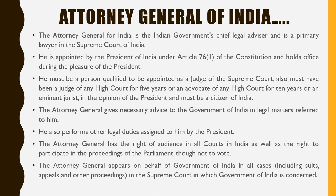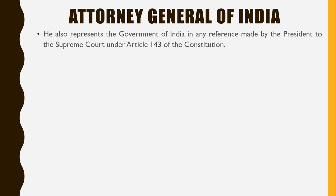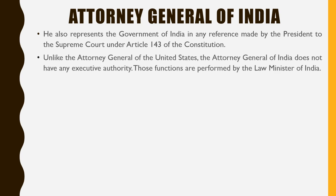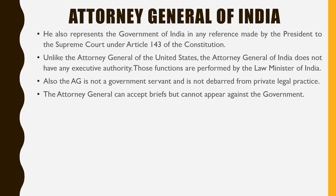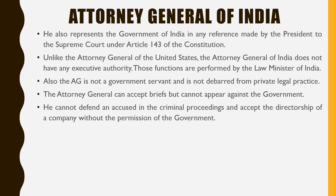The AG appears on behalf of the Government of India in all cases in the Supreme Court in which the Government of India is concerned. He also represents the Government of India in any references made by the President to the Supreme Court under Article 143 of the Constitution. Unlike the AG of the US, the AG of India does not have any executive authority; those functions are performed by the Law Minister of India. The AG is not a government servant and is not debarred from private legal practice. The AG can accept briefs but cannot appear against the Government, cannot defend an accused in criminal proceedings, and cannot accept the directorship of a company without the permission of the Government.